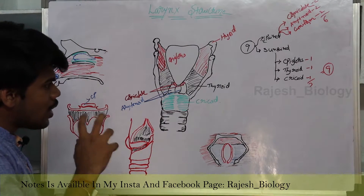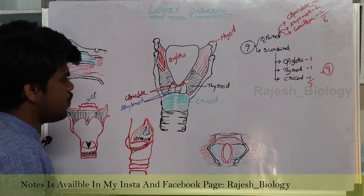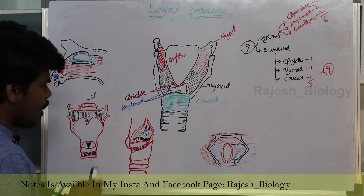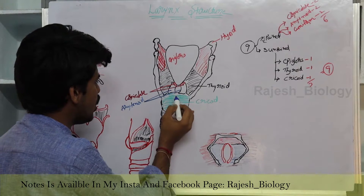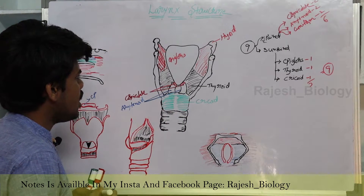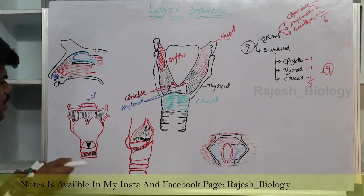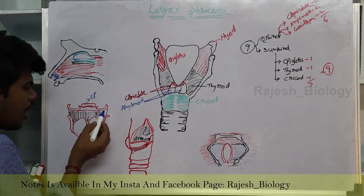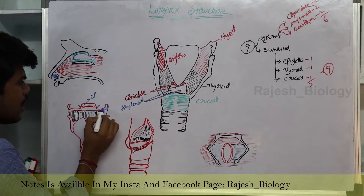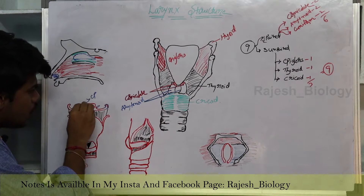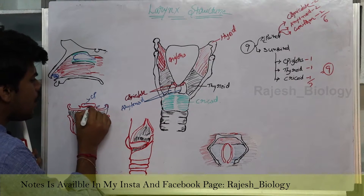Regarding the thyroid structure and its functions, we will look at those in endocrinology. Next, the cricoid cartilage — this is the cricoid cartilage, and the arytenoid cartilage is present between the corniculate and cricoid cartilages. Coming to the different membranes: the hyoid bone has minor and major branches, and the complete bone is known as the hyoid bone. There is a tissue membrane between the epiglottis and hyoid bone.